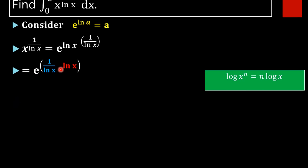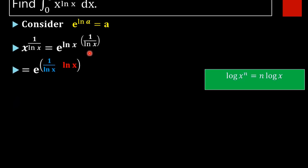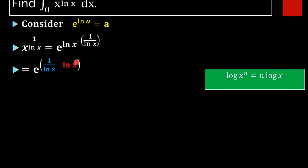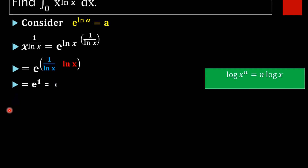Now we cancel ln x and ln x, and what remains is e raised to 1, which equals e. So the simplified form of x raised to 1 by ln x is equal to e.